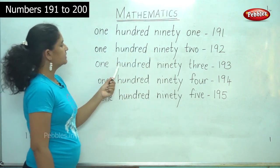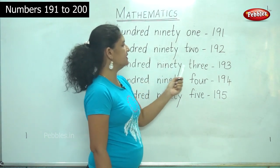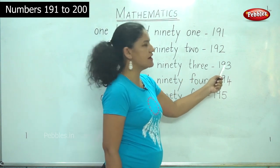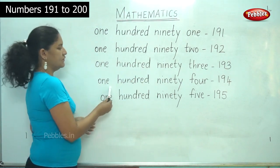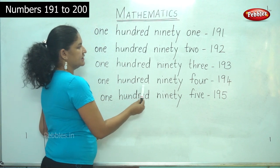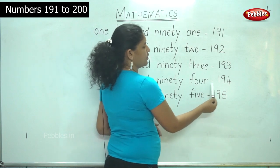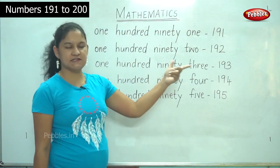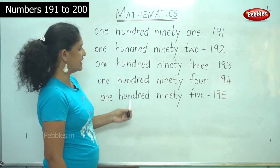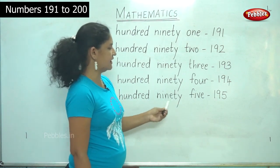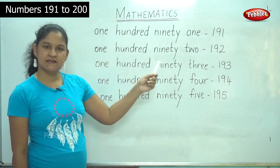193: O-N-E H-U-N-D-R-E-D N-I-N-E-T-Y T-H-R-E-E. 1-9-3. 194: O-N-E H-U-N-D-R-E-D N-I-N-E-T-Y F-O-U-R. 1-9-4. 195: O-N-E H-U-N-D-R-E-D N-I-N-E-T-Y F-I-V-E. 1-9-5.